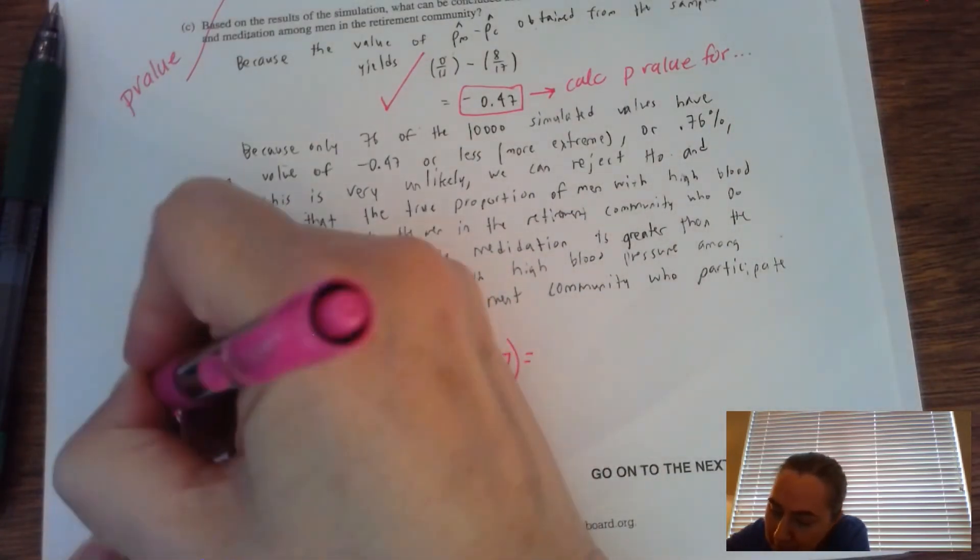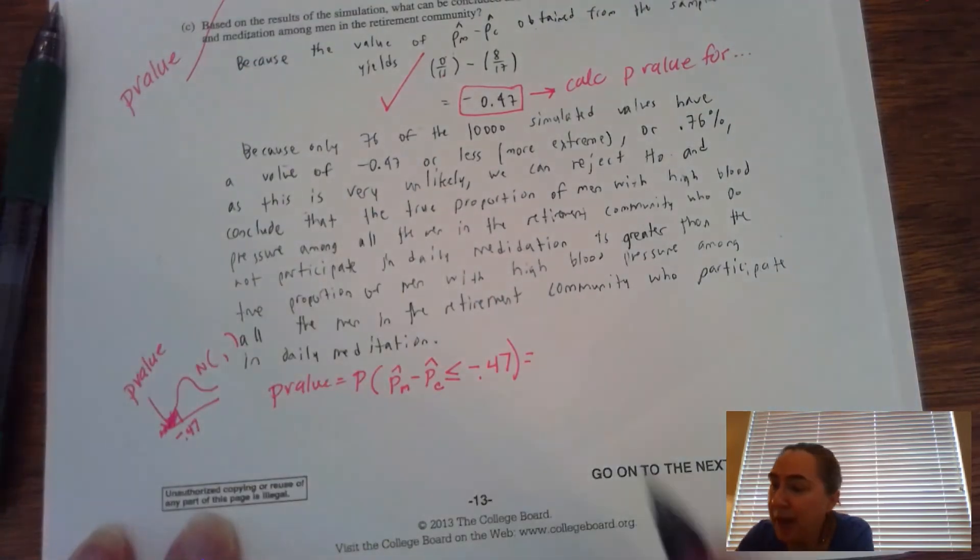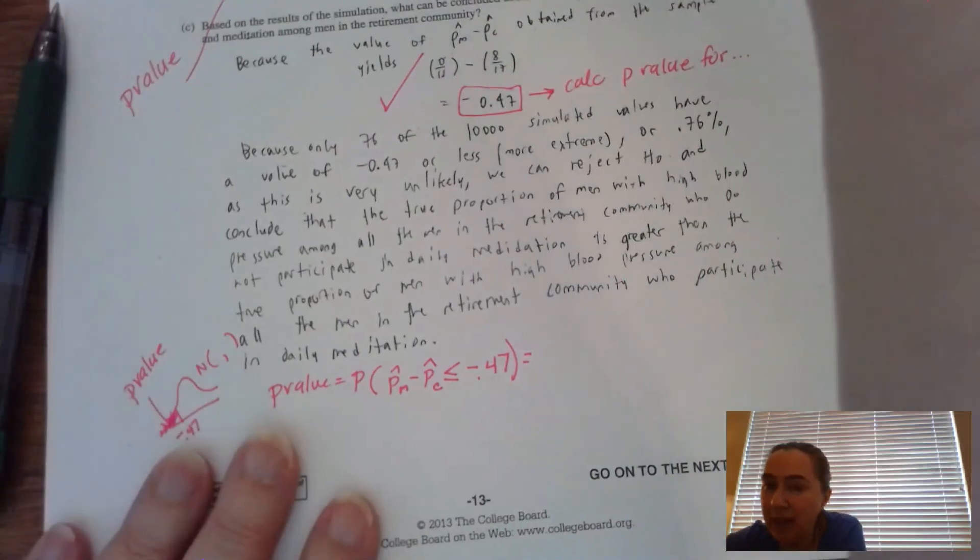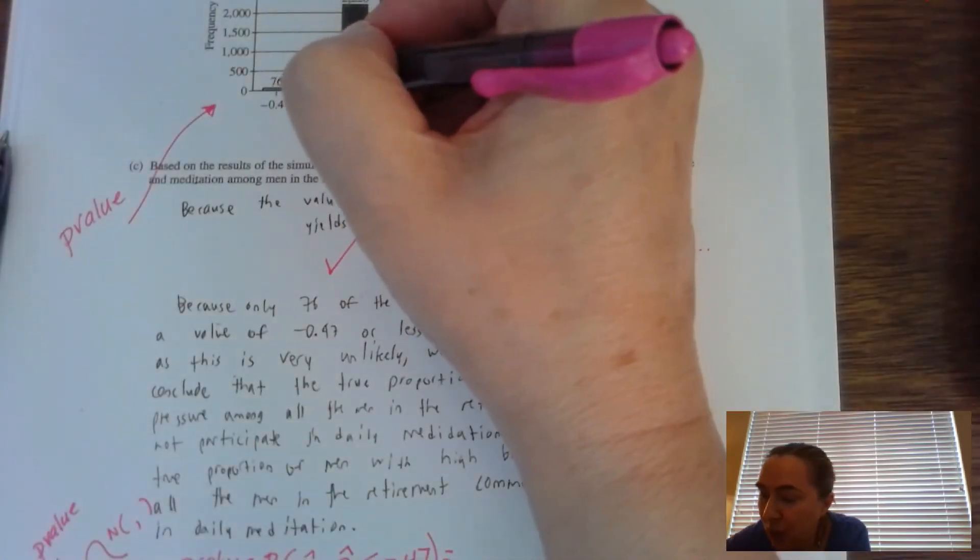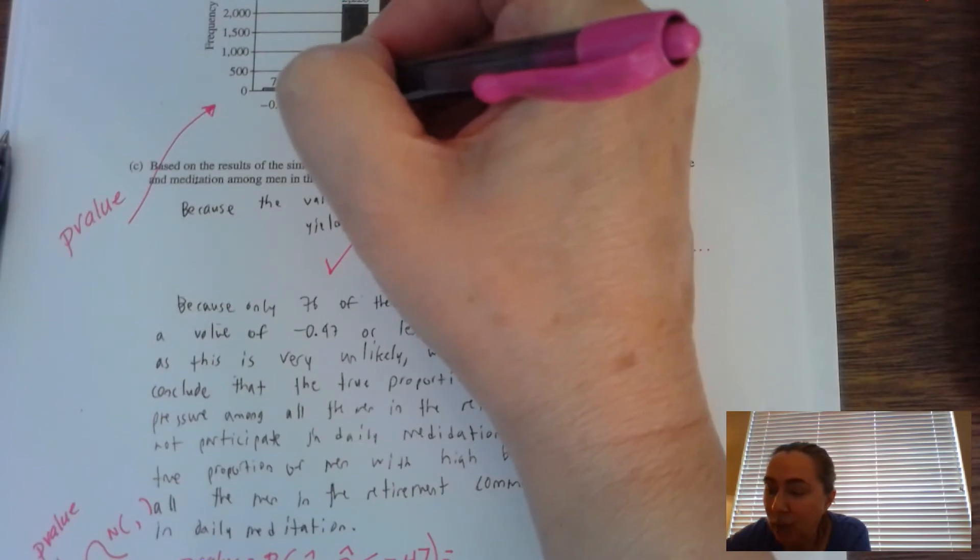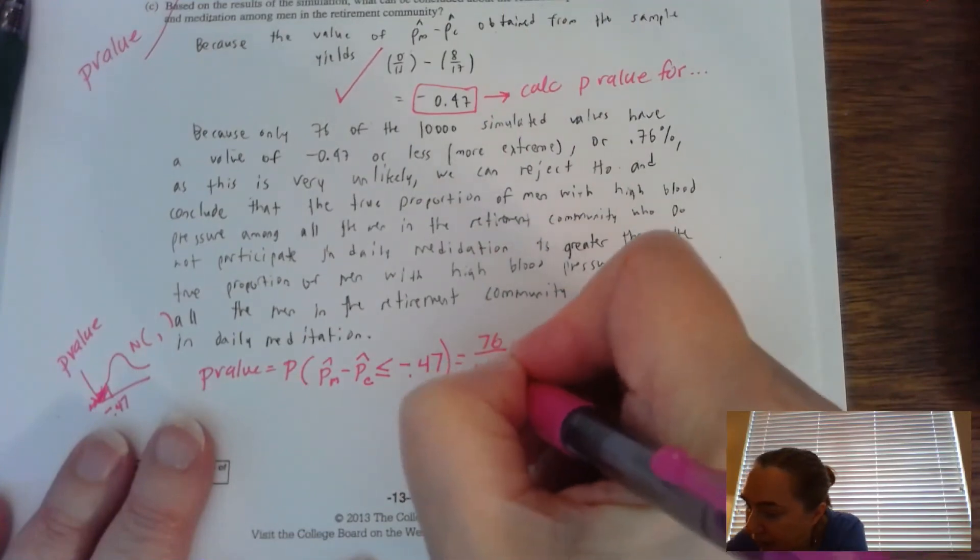And you can count up. Well, actually you don't even have to count. You can look up here and see that there are 76 results that had that value or lower. Well, it's the only one actually.